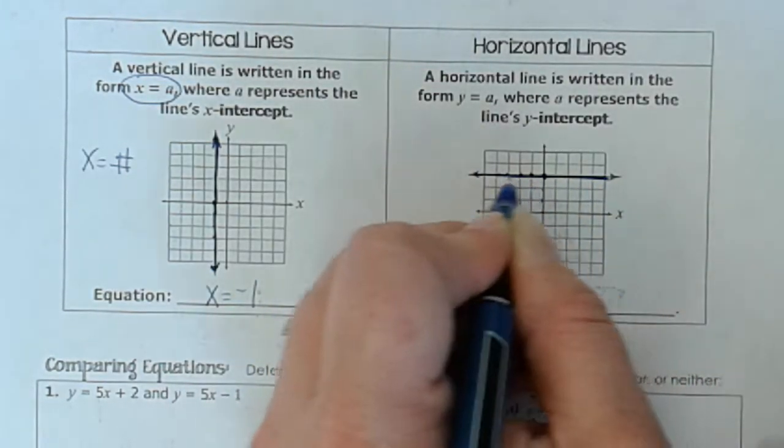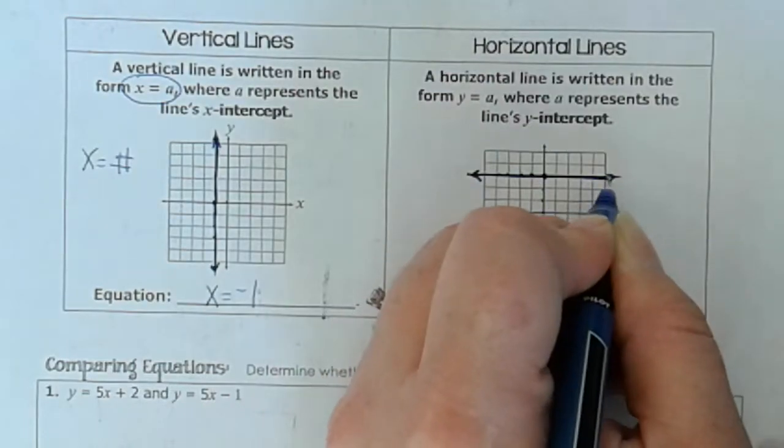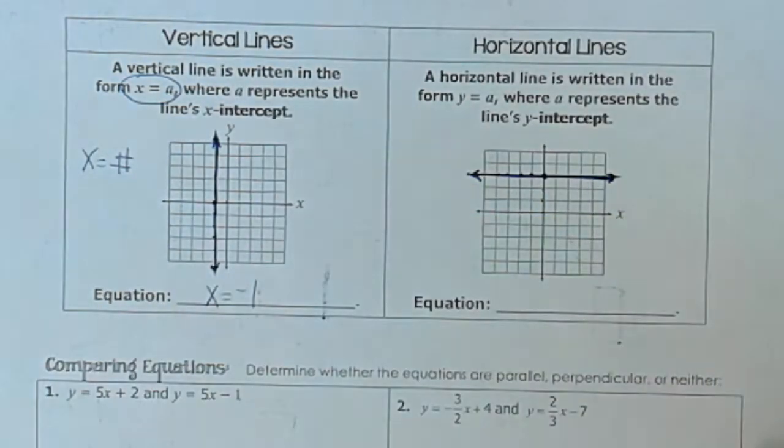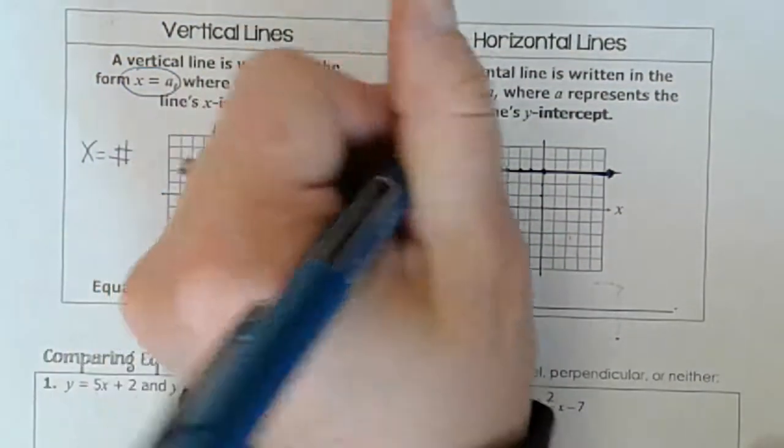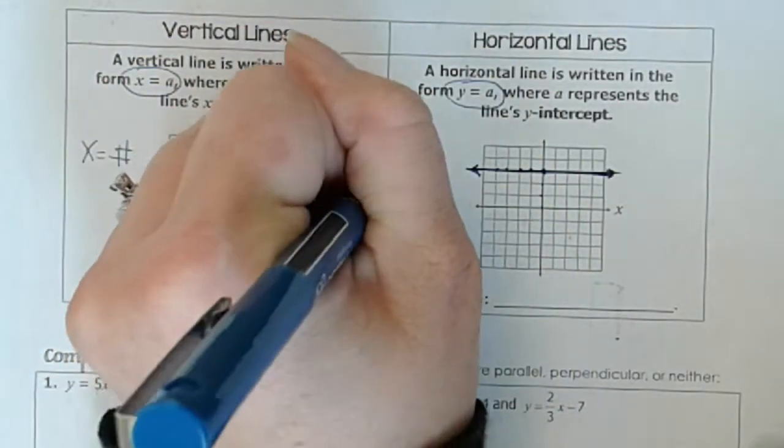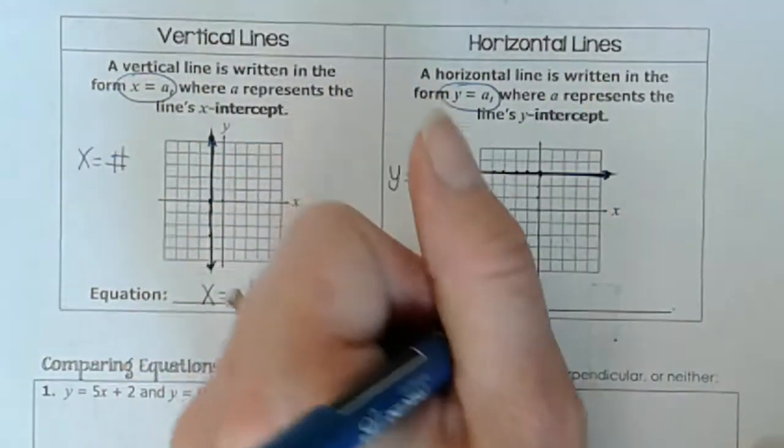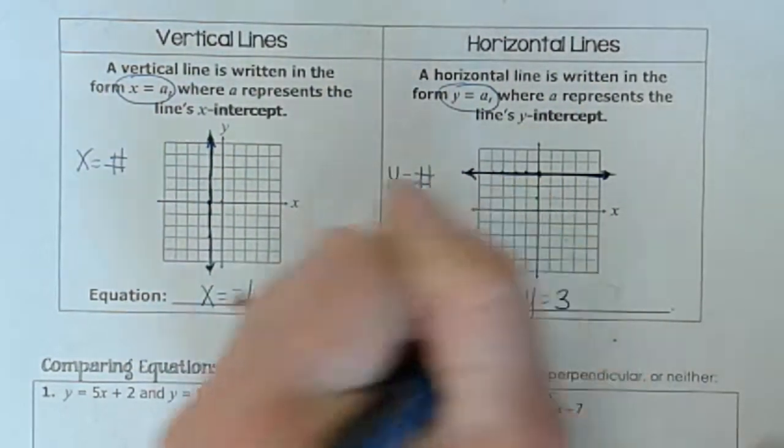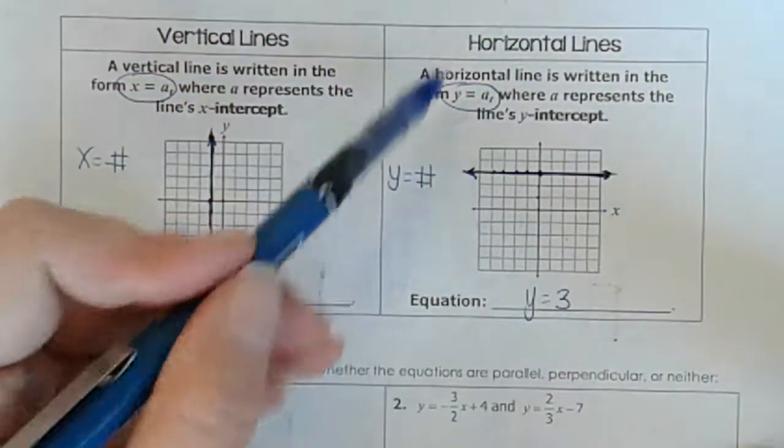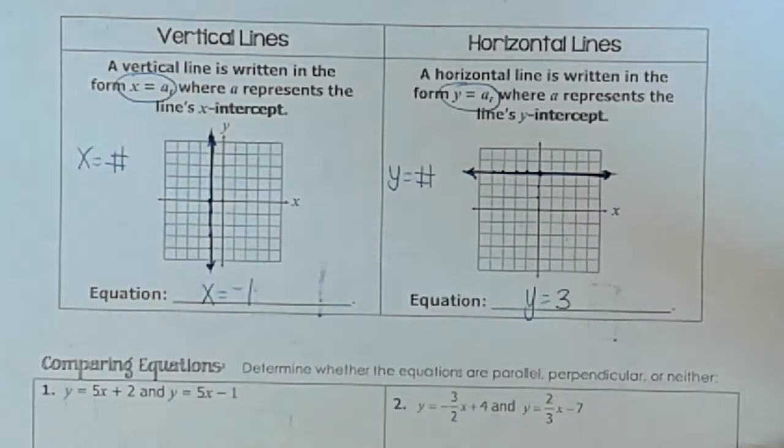So no matter what number I put in for x, the answer, the point on this line is always going to be y equals 3. So the equation for a horizontal line is y equals some number, and in this case, no matter what value I put in for x, I always have y equals 3. So the equation for a horizontal line is going to be y equals something.